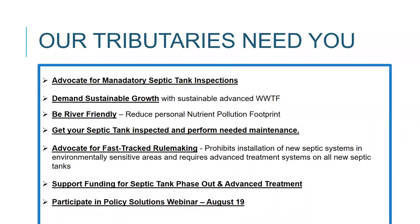So what can we do? One thing that the Blue Green Algae Task Force recommended that was not implemented was mandatory septic tank inspections. It's critical that we have mandatory septic tank inspections, and then the maintenance required to offset any problems that are found. We also have to continue to demand sustainable growth with advanced wastewater treatment facilities. We have to deal with human waste — we can't just keep playing whack-a-mole with our sewage issues, as we've talked about with sewage sludge as well as septic tanks and sewer. We all need to be river friendly, continuing to do our part to reduce our nutrient footprint along our tributaries. If you do have a septic tank, get it inspected, perform needed maintenance, and if you can upgrade to advanced treatment septic tanks or hook onto sewer if it's available.